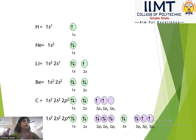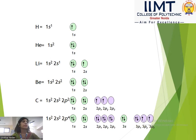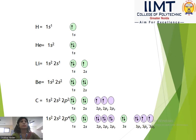In the Aufbau Principle, the principle states that in the ground state of an atom, an electron enters the lowest energy orbital first. Subsequent electrons are filled according to increasing energy.